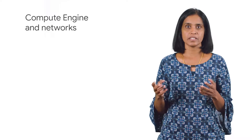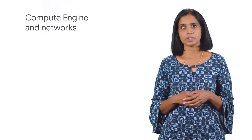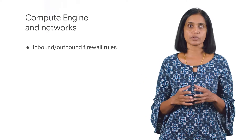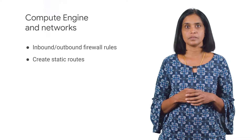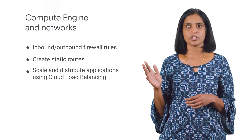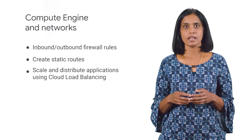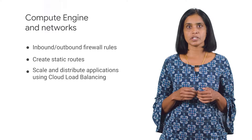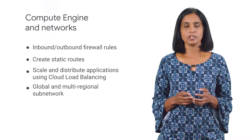Networks connect Compute Engine instances to each other and to the internet. Networks in the cloud have a lot of similarities with physical networks. You can segment networks, use firewall rules to restrict access to instances, and create static routes to forward traffic to specific destinations. You can scale up applications on Compute Engine from zero to full throttle with cloud load balancing. Distribute your load-balanced compute resources in single or multiple regions close to your users and to meet your high availability requirements. Sub-networks segment your cloud network IP space, and sub-network prefixes can be automatically allocated or you can create a custom topology.